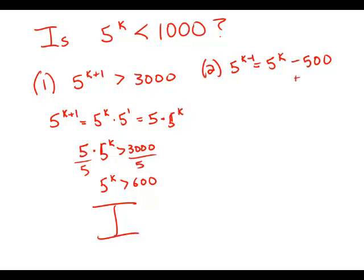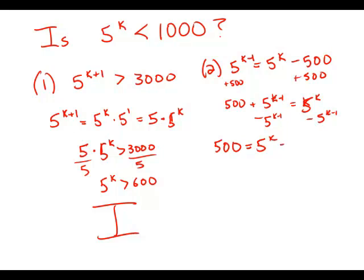What I'm going to do is I'm going to add 500 to both sides. And then I'm going to subtract 5 to the k minus 1 from both sides. So I get 500 equals 5 to the k minus 5 to the k minus 1.